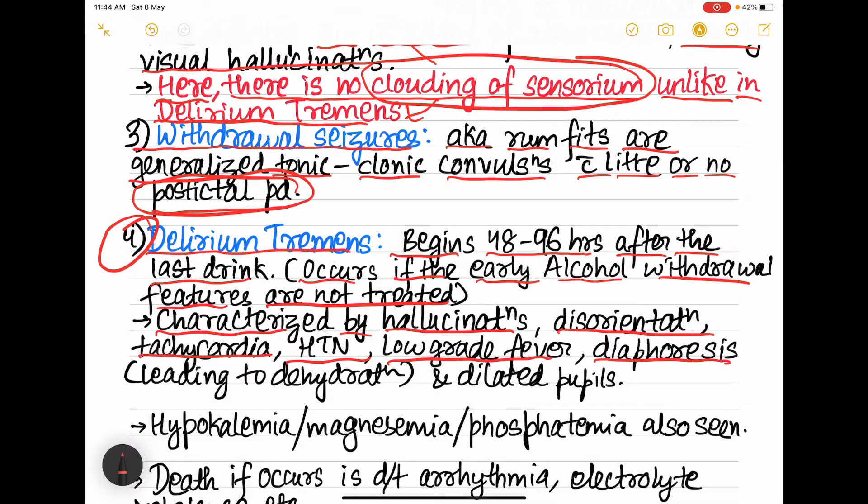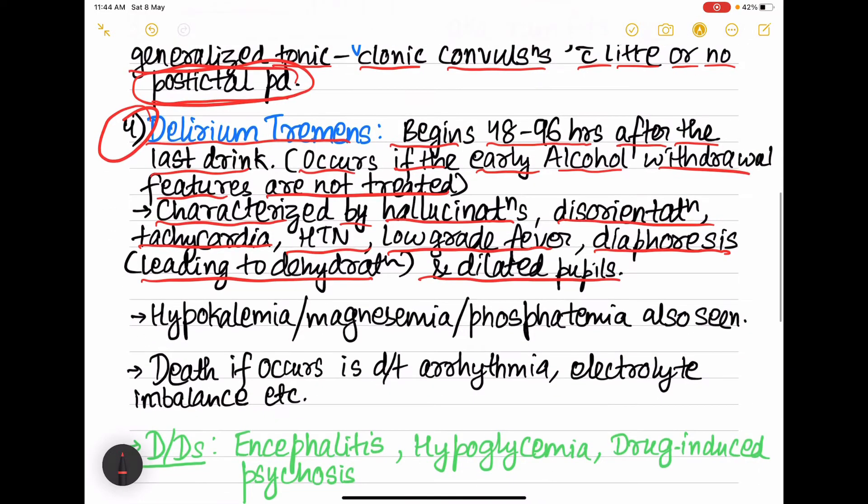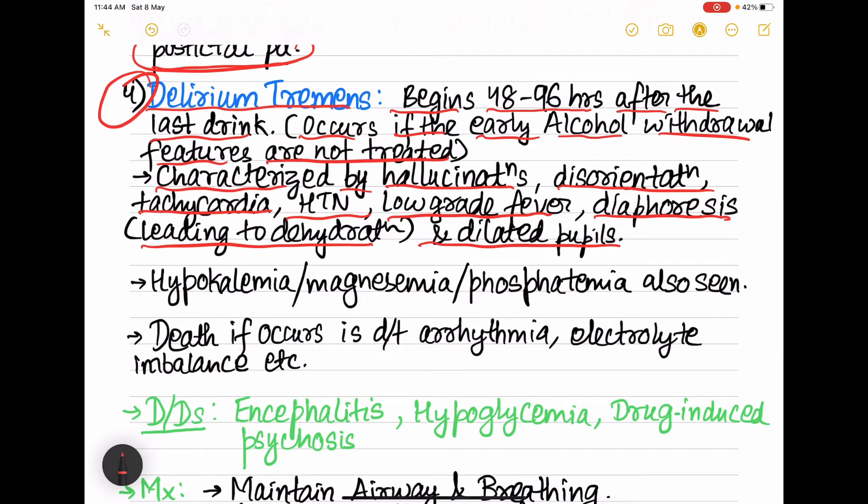Also here hypokalemia, hypomagnesemia, hypophosphatemia are also seen. Death occurs in delirium tremens if there is arrhythmia or electrolyte imbalance, and sometimes pneumonia is also cause of death in delirium tremens.